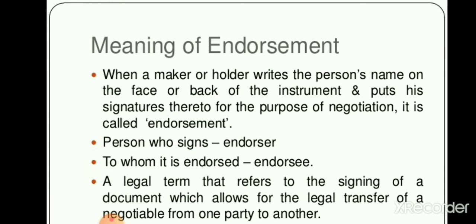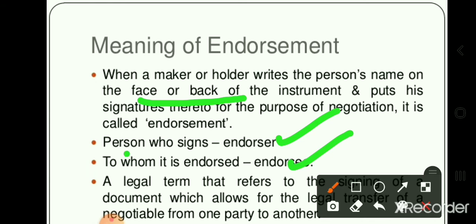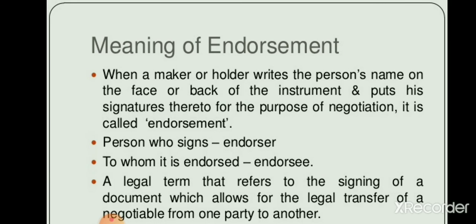When a maker or holder writes a person's name on the face or back of the instrument and puts his signature there too for the purpose of negotiation, it is called endorsement. So here the clarity is that it can be written on the back side or on the face, and in special cases it can also be written on a separate attached sheet. Two parties are involved: one is the endorser and the second is the endorsee. The endorser is the one who signs, and the one to whom it is endorsed is called the endorsee. The legal term that refers to the signing of a document which allows for the legal transfer of a negotiable instrument from one party to another is called endorsement.